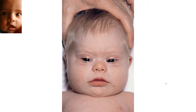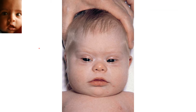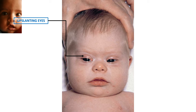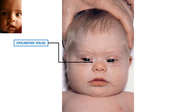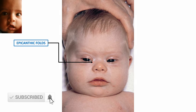You can see the smaller head in comparison to the other baby. You can see the upslanting eyes — the outer canthus is higher than the inner canthus, which is called a mongoloid slant. You can also see the epicanthic fold. To identify an epicanthic fold, the inner canthus will be rounded rather than pointed, as in normal children.